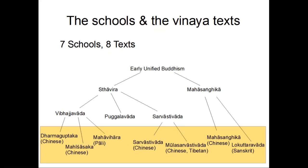I was planning to explain the whole diagram of how all the schools relate to each other, but my presentation is way too long and the diagram is too complicated. The seven schools with surviving texts are shown in this orange box. The first three are like triplets: the Dharmagupta school with a Chinese text, still practiced by Mahayana monastics today; the Mahishasaka school with a Chinese text, now extinct; and the Mahavihara, also called Theravada, with our Pali text.